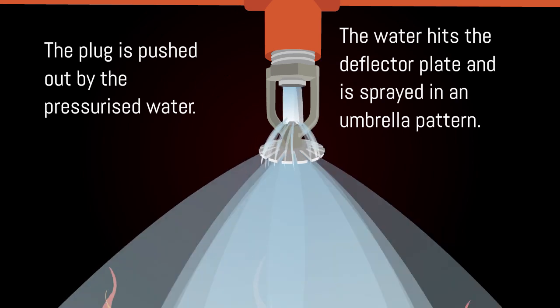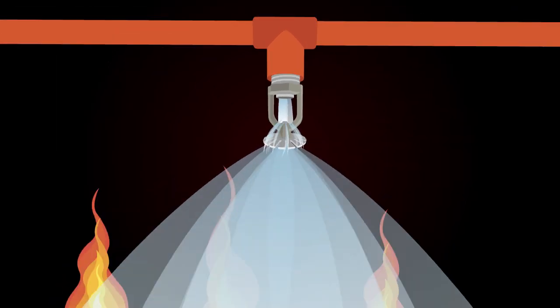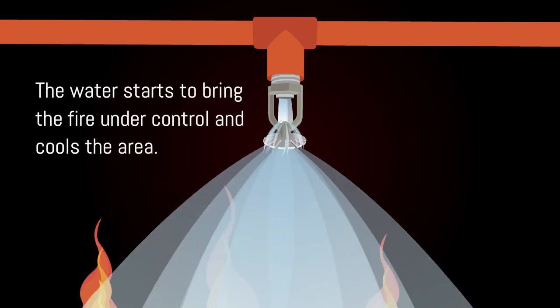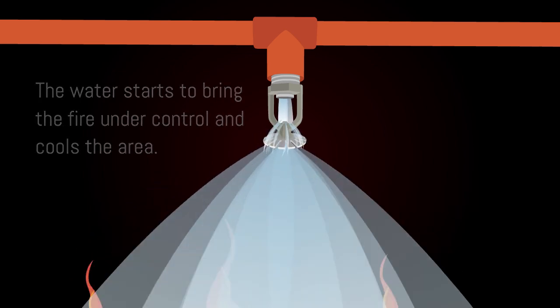The deflector plate helps to generate the umbrella spray pattern. The water starts to bring the fire under control and cools the area.